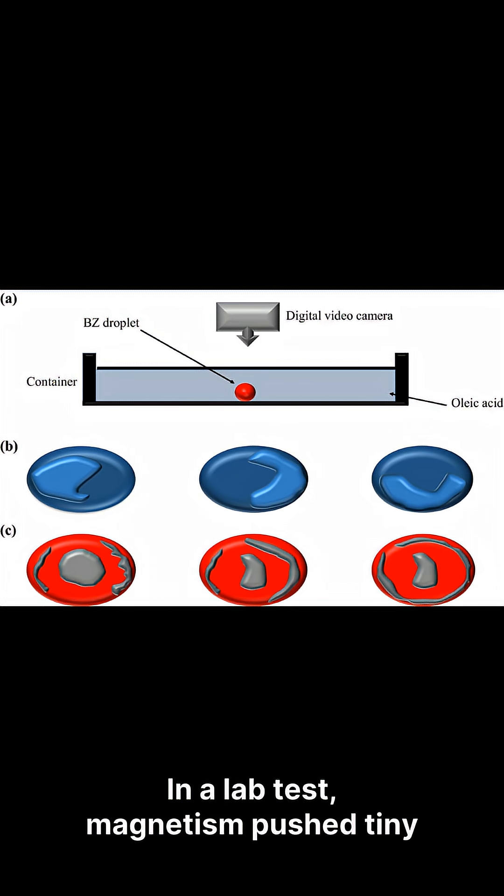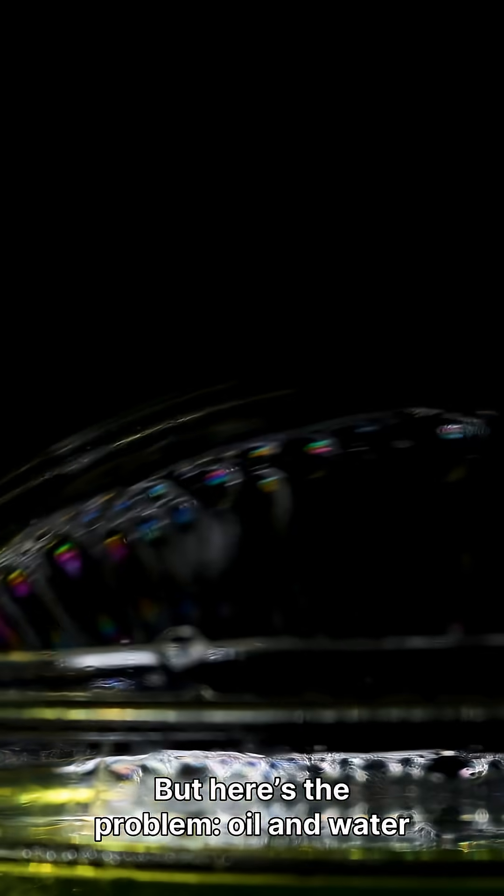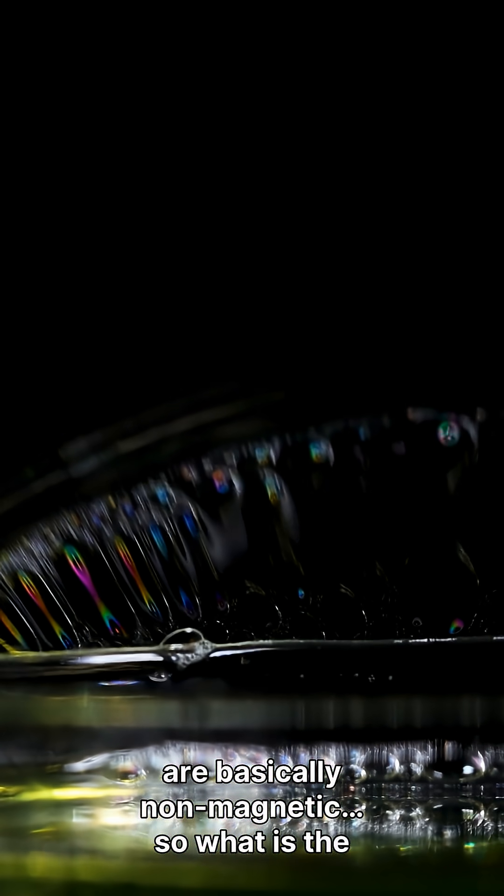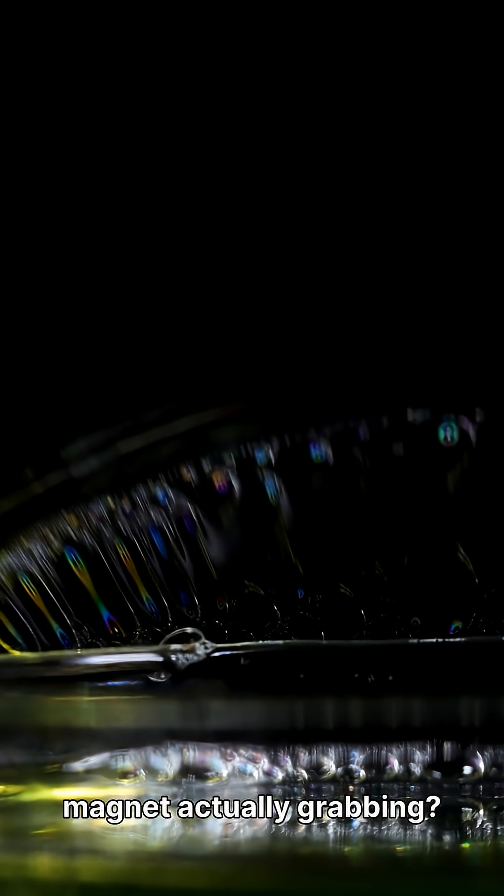In a lab test, magnetism pushed tiny droplets into weird behaviors that look like the rules of mixing got rewritten. But here's the problem. Oil and water are basically non-magnetic. So what is the magnet actually grabbing?